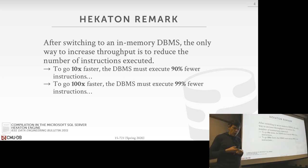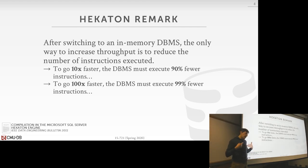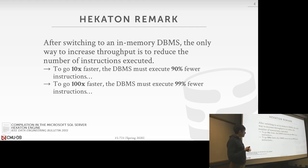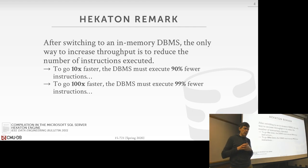A couple of classes ago we talked about how to get our system to run as fast as possible. We said the way to do this is to reduce the number of instructions we have to execute and get more instructions per cycle. This is a back-of-the-napkin calculation the Hekaton guys did explaining why they were doing code generation — if you want your database system to go 10x faster, you need to execute 90% fewer instructions.